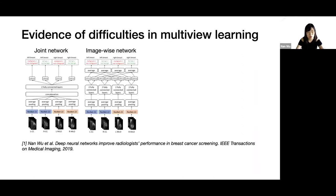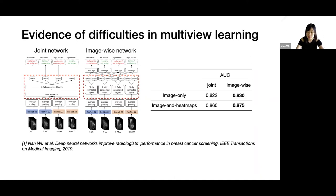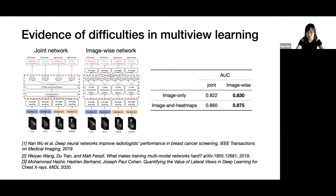We compare two networks. In a joint network, representations from each view are concatenated as input to the classifiers. While in the image-wise network, there are four separate models operating independently on each view. We observed that the image-wise network outperforms the joint network, demonstrating that it is hard to use this type of network to fully utilize information from multiple views.